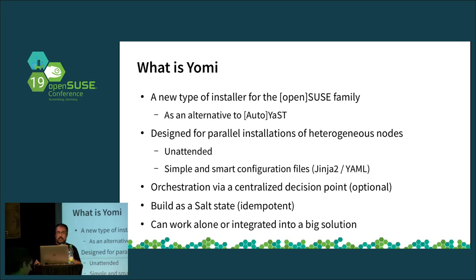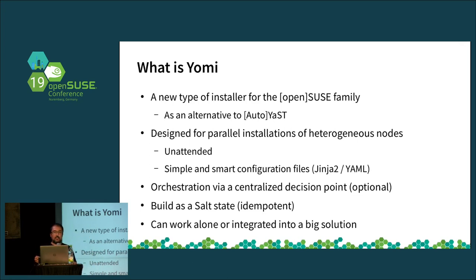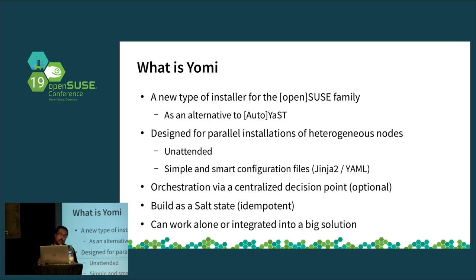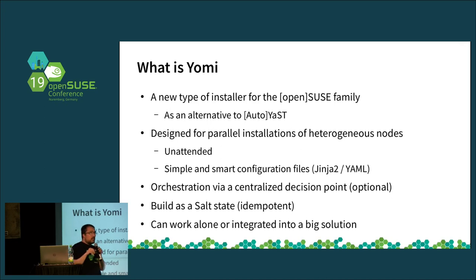JOMI is designed to make installations in an unattended way — a way to run hundreds or thousands of installations and complete them without user intervention. For that, we use a smart configuration file. Since Salt uses YAML, we use YAML together with a template engine, in this case Jinja2. One of the requirements is to have some kind of central point of decision — a compute node or orchestrator — that makes decisions when something needs to be decided.